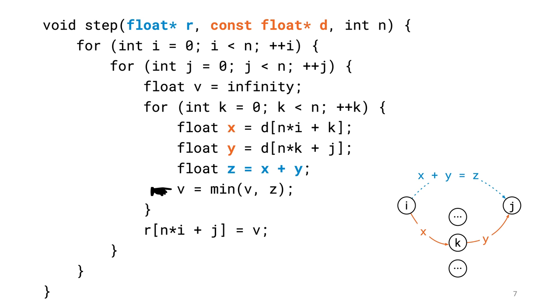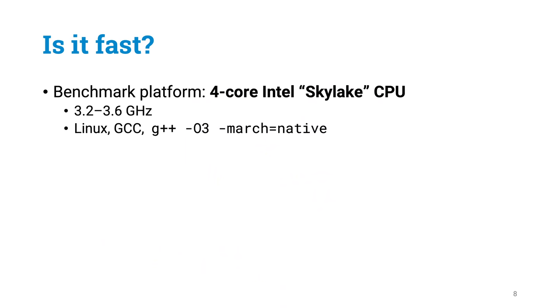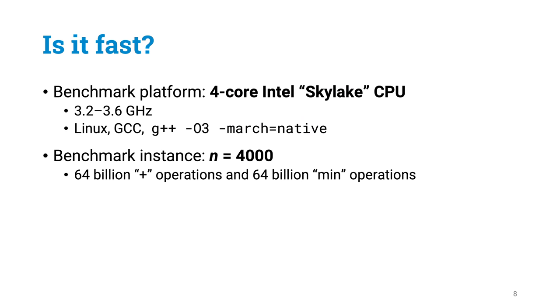And finally we take the minimum of all of these costs. That is the cheapest route, and we store this result into our result matrix. So how does this code perform? Let's compile it with the usual optimization flags, and run it on a typical modern desktop computer. Let's create an instance where n equals 4000. So we have got 4000 points, and therefore the input matrix and the result matrix have dimensions 4000 by 4000.